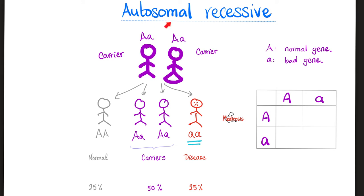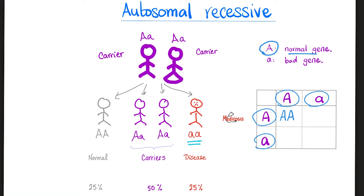Cystinuria is an autosomal recessive disease, which means if daddy is a carrier and mommy is a carrier, then 25% of children are fine, 50% are carriers who are phenotypically healthy but genotypically carry the bad gene, and 25% of offspring actually have the disease. Using the Punnett square: daddy is Aa, mommy is Aa. The AA child is fine; Aa children are carriers; the aa child is sick and will show the symptoms of cystinuria.